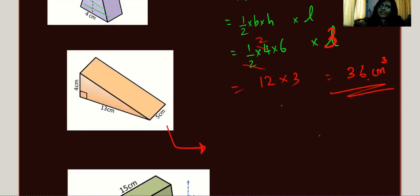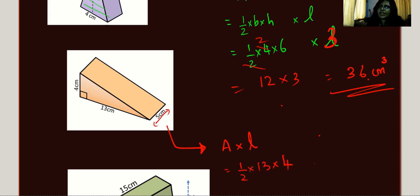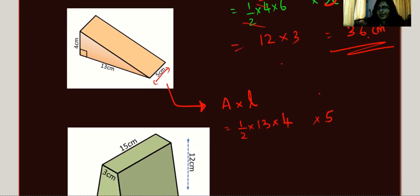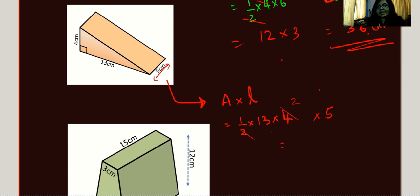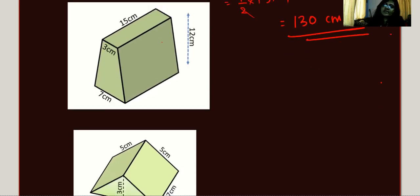For the next question, the shape is a right-angle triangle. To find the volume: area of that triangle times length. So half times base times height times the length, which is 5 cm. That gives 13 times 10, which is 130 cm³. Now the next shape — it's a trapezium, because two sides are parallel but the other two sides are not parallel. It's a four-sided polygon with only two parallel sides.